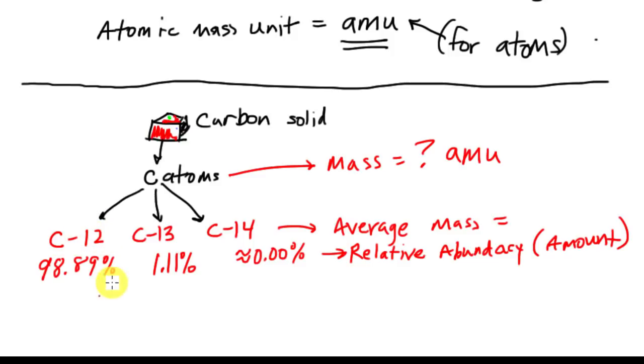And it's always given as a percentage. So what that means is that I have way more carbon-12 than I do carbon-13 and carbon-14. So if I were to try to figure out the average, I can't just add them up because this contributes way more to the mass than the other two. Okay, so what we have to do is we have to calculate the average.